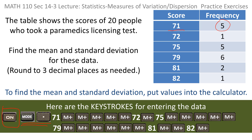Then you start entering all the scores with the proper frequency. So 71 gets entered five times, 72 gets entered once, 75 gets entered five times, 79 gets entered six times, 81 twice, and finally 82 once.